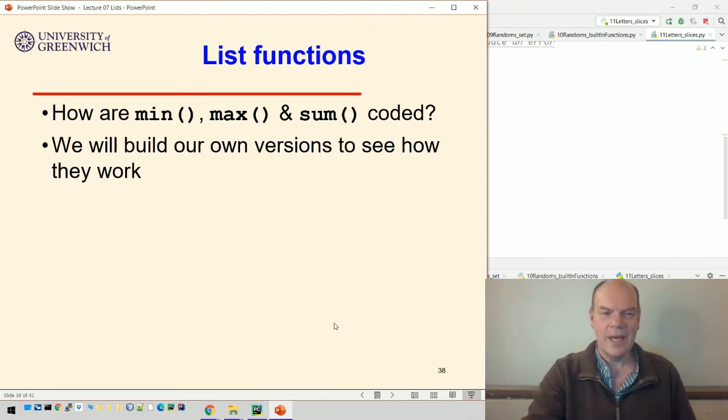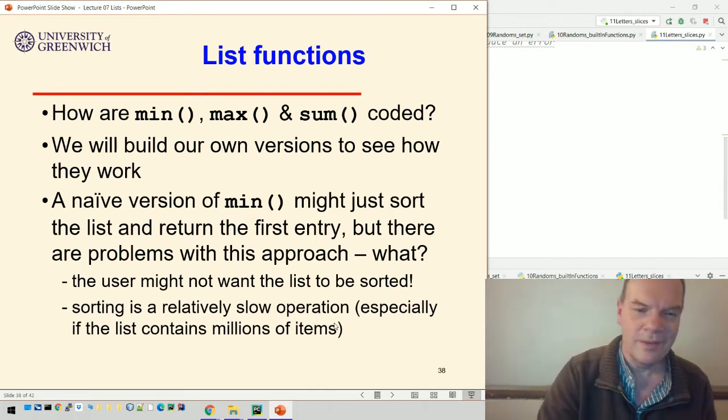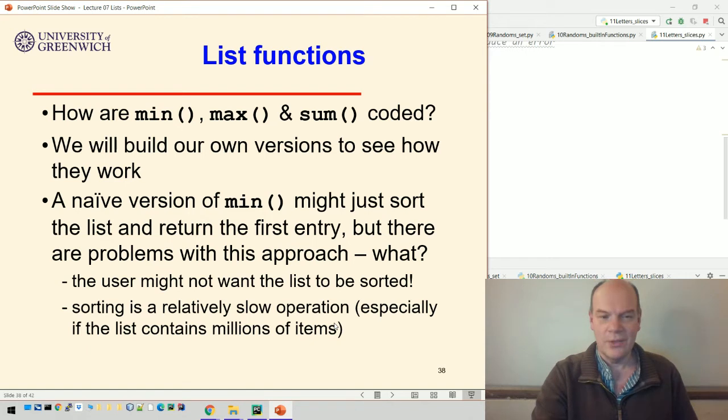We're going to build our own versions to see how they work. Now, naively, one way to find the minimum value in a list would be to sort it and return the first entry. But that would certainly get the right answer, but it's problematic.